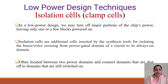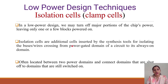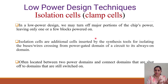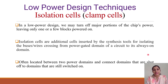Now let's discuss about isolation cells — sometimes they are called clamp cells. As discussed in power gating, one part of the chip is continuously on because it is working continuously, whereas another part is on for some time and may be off after some time. In low power design, we may turn off major portions of the chip's power, leaving only one or few blocks powered on, to save power. Isolation cells are additional cells inserted by the synthesis tool for isolating the wires crossing from the power gated domain to the circuit which is continuously on.